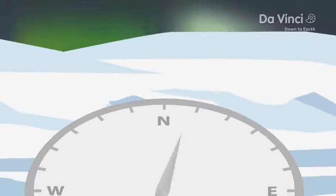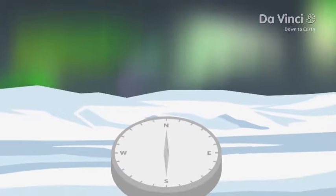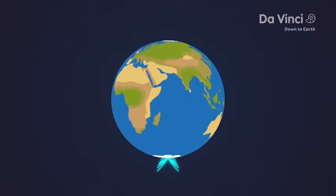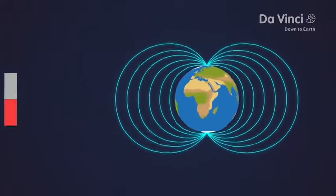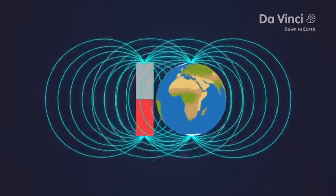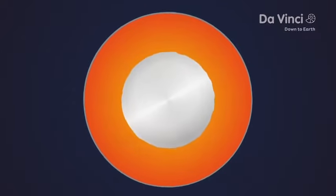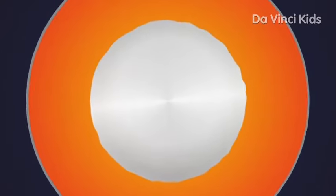A compass needle that points to the north and the mysterious polar lights both have the same cause: the Earth's magnetic field. Our Earth is a gigantic magnet. Its core is a huge sphere made of rotating nickel and iron.